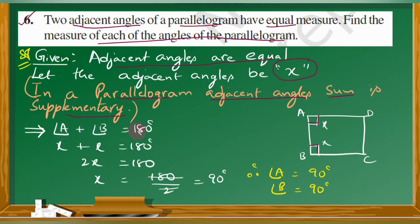So x plus x is equal to 180 degrees. That gives us 2x equals 180, so x is equal to 90 degrees. Therefore angle A is equal to 90 degrees and angle B is also equal to 90 degrees.